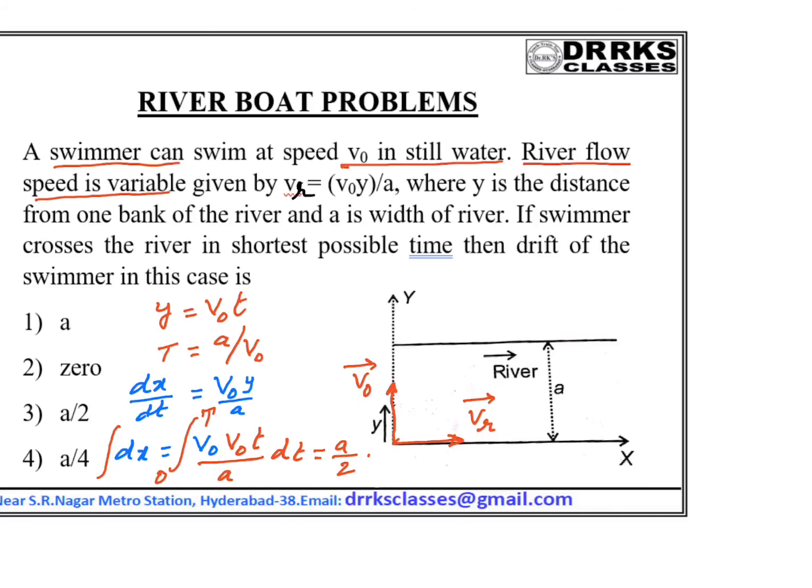River flow speed is variable. Vr is equal to V0 y by A, where y is the distance from one bank of the river and A is the width of the river.